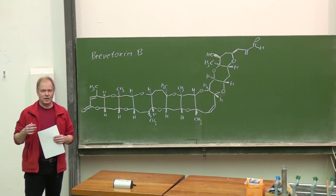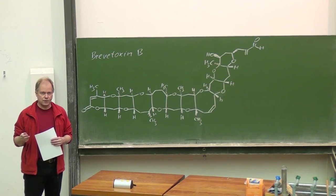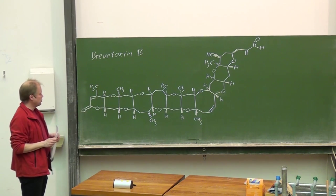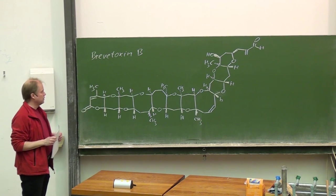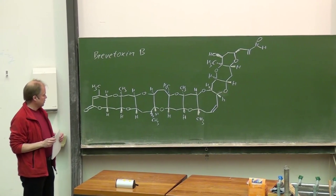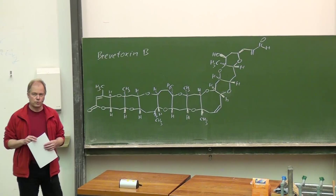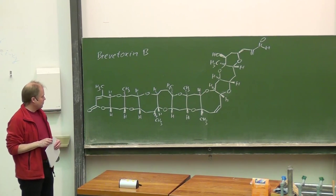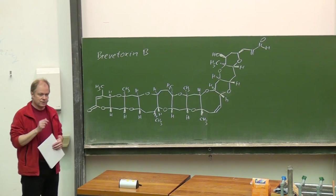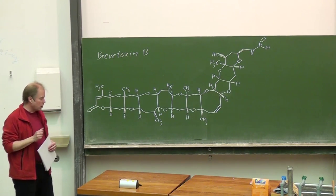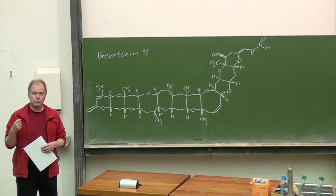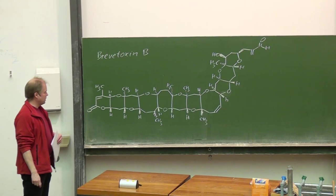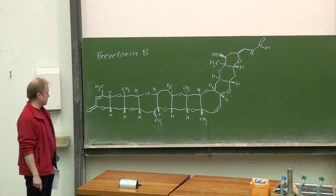It's not actually the Mount Everest — maybe palytoxin with 64 stereogenic centers is the Mount Everest. However, this molecule, with lots of annulated oxygen heterocycles and 23 stereogenic centers, is quite a nice target for a natural product synthesis. We will try to analyze this structure — not completely — but to give an impression of how one can solve a problem like this in terms of retrosynthetic analysis.